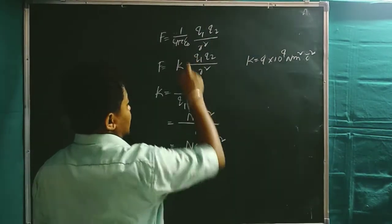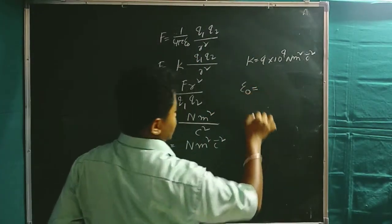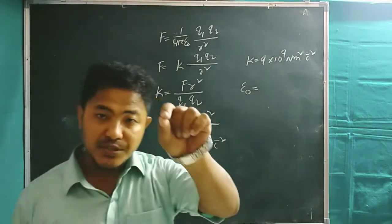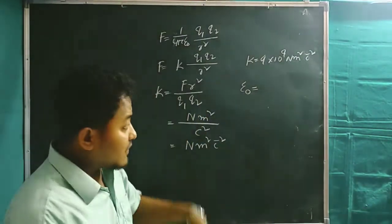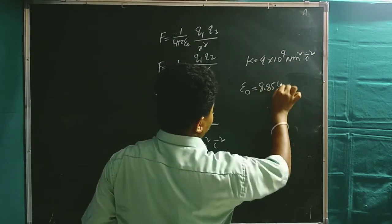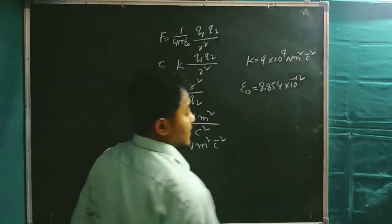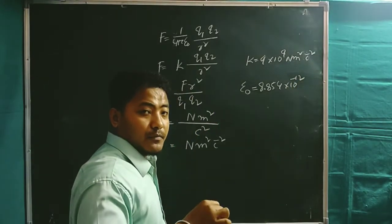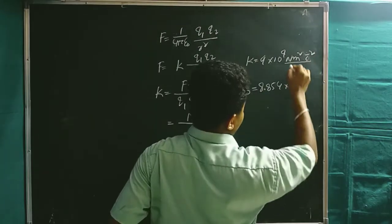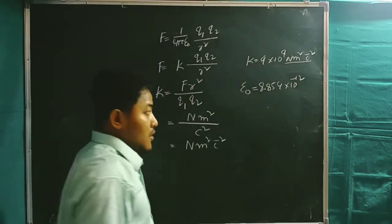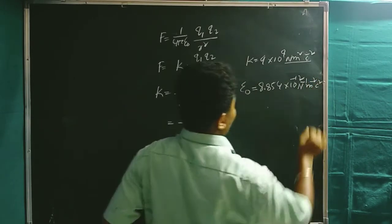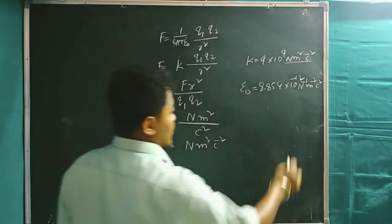One more thing: ε₀ (epsilon naught) is the electric permittivity in free space. The value of electric permittivity in free space is 8.854 × 10⁻¹² . Interestingly, the SI unit of electric permittivity is opposite to the unit of k — that is, C²/(N·m²), or per newton per meter squared times coulomb squared.